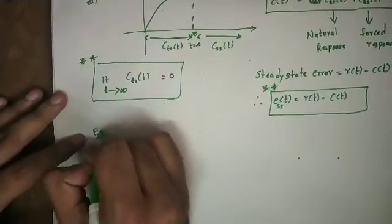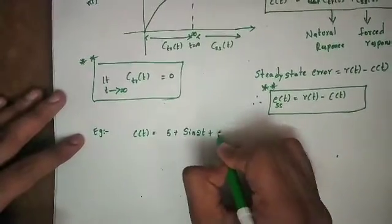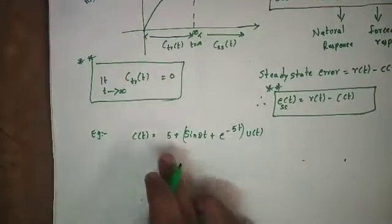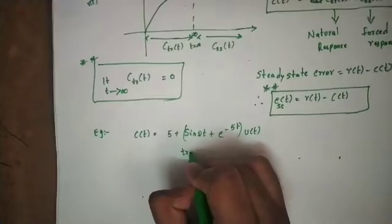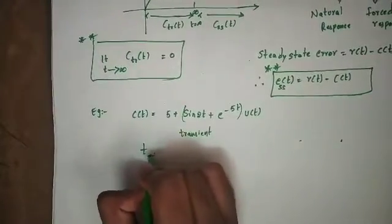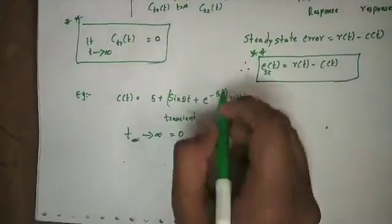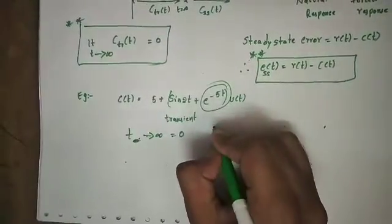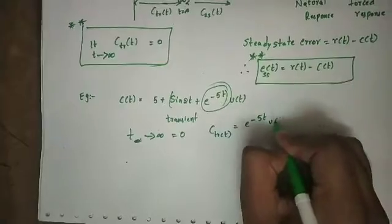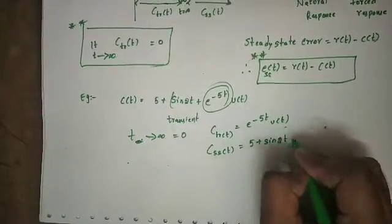Example: suppose c(t) equals 5 plus sin(2t) plus e^(-5t) · u(t). If t tends to infinity, what are the transient terms? The terms that go to 0 as t tends to infinity are the transient terms. So e^(-5t) goes to 0, therefore c_transient(t) equals e^(-5t) · u(t). The steady state response is 5 plus sin(2t) · u(t).